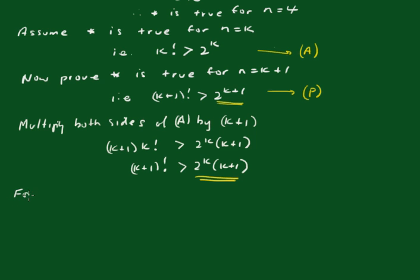So I'll state that for P to be true, 2 to the k times k plus 1 has got to be greater than 2 to the k plus 1. In other words, 2 to the k times k plus 1 minus 2 to the k plus 1 has got to be greater than 0.